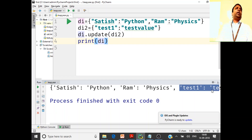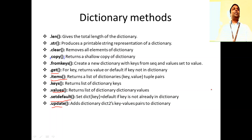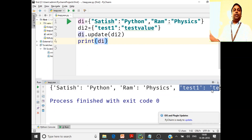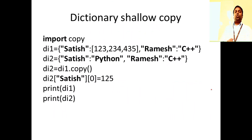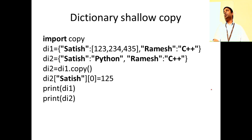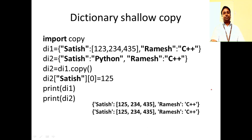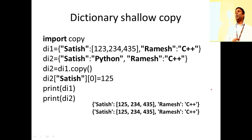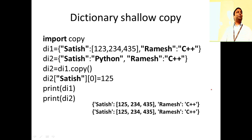So many methods are supported by dictionaries — that's why dictionaries are always focused on more in examinations. Is this clear? I mentioned that di1.copy() is a shallow copy. Can you prove it supports only shallow copy by reading the code and explaining it? Can someone come to the board and explain what this code is about and why it's an example of shallow copy?